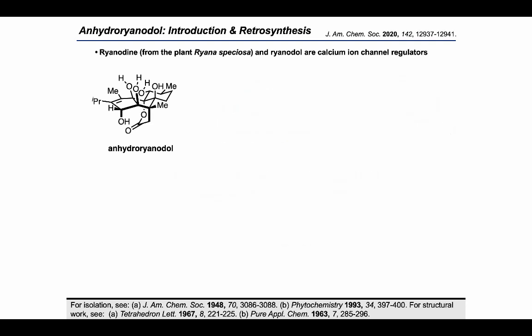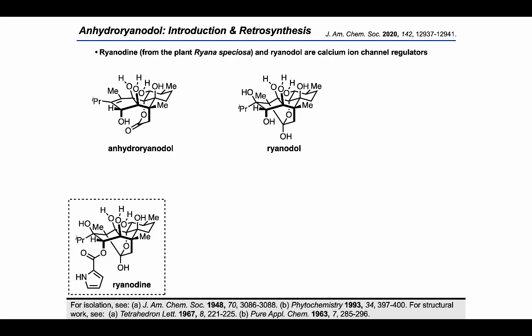To put this target in context, anhydroryanidol is a derivative of ryanidol and ryanidine, which are calcium ion channel regulating natural products originating from the plant Rhianna speciosa. It's been previously shown that anhydroryanidol can be converted into ryanidol through a protocol we'll take a look at a little bit later.